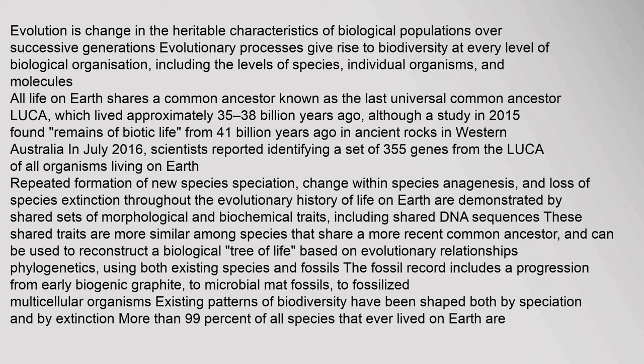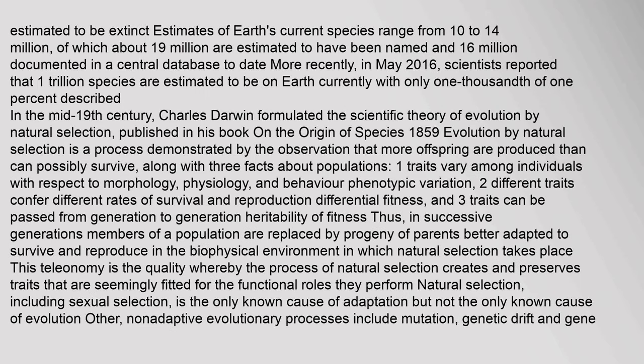Using both existing species and fossils, the fossil record includes a progression from early biogenic graphite, to microbial mat fossils, to fossilized multicellular organisms. Existing patterns of biodiversity have been shaped both by speciation and by extinction. More than 99% of all species that ever lived on Earth are estimated to be extinct.